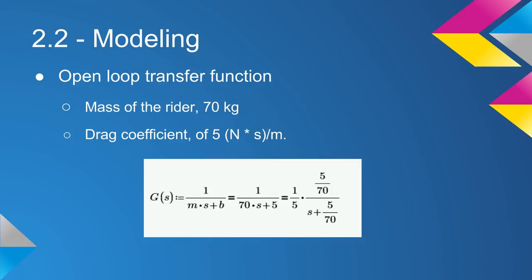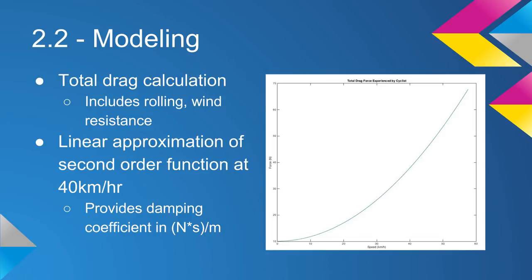Our model for our system and the plant is a first-order model using the mass of the rider and a drag coefficient. Inside the drag coefficient is the air resistance and the rolling resistance.